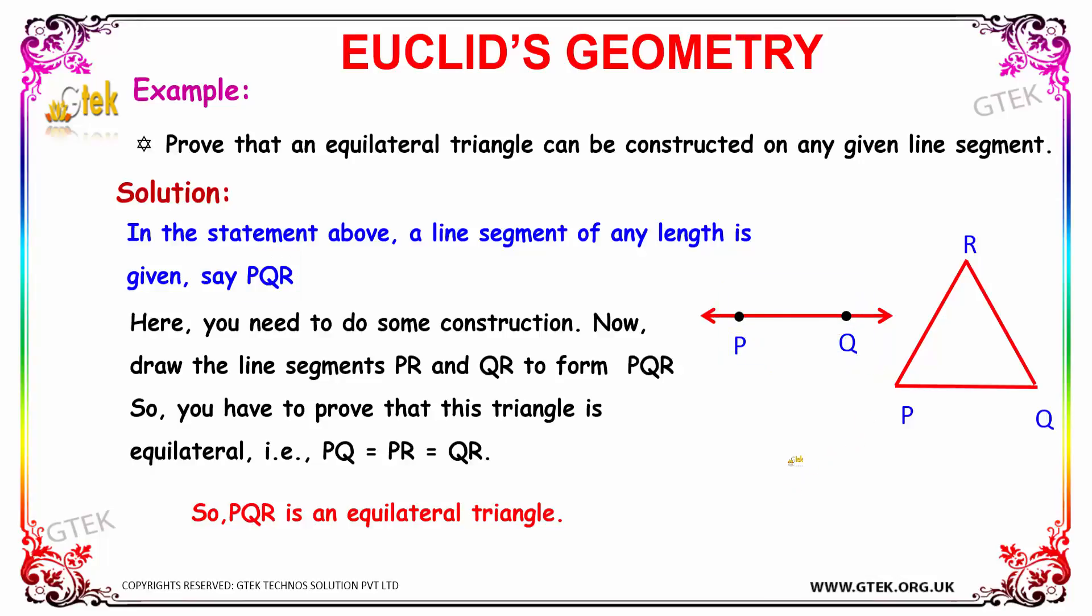Here you need to do some construction in order to make an equilateral triangle. Now we draw the line segments PR and QR in order to form a triangle that is equilateral.